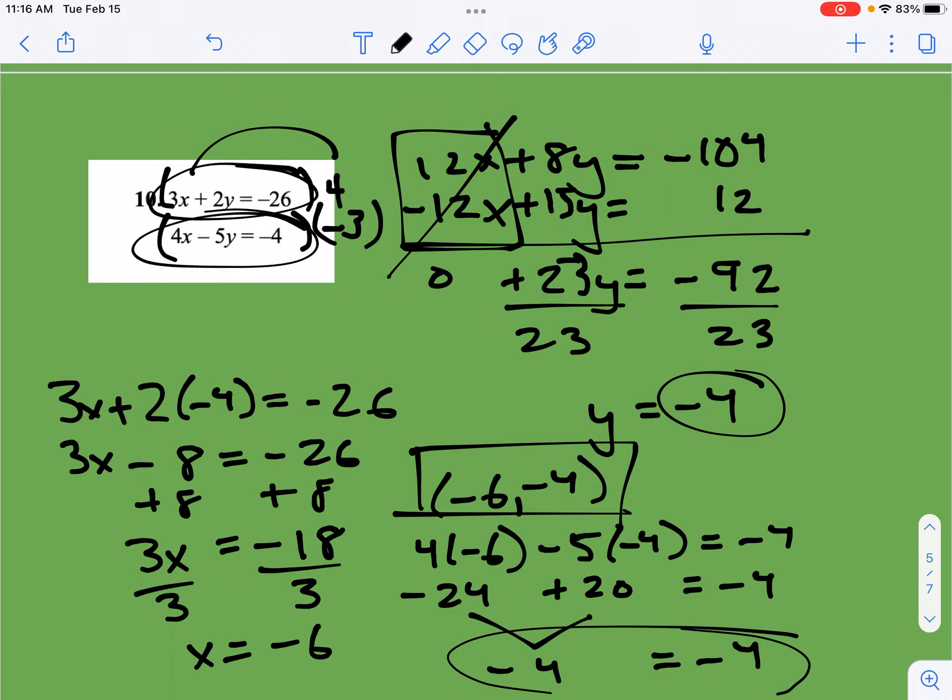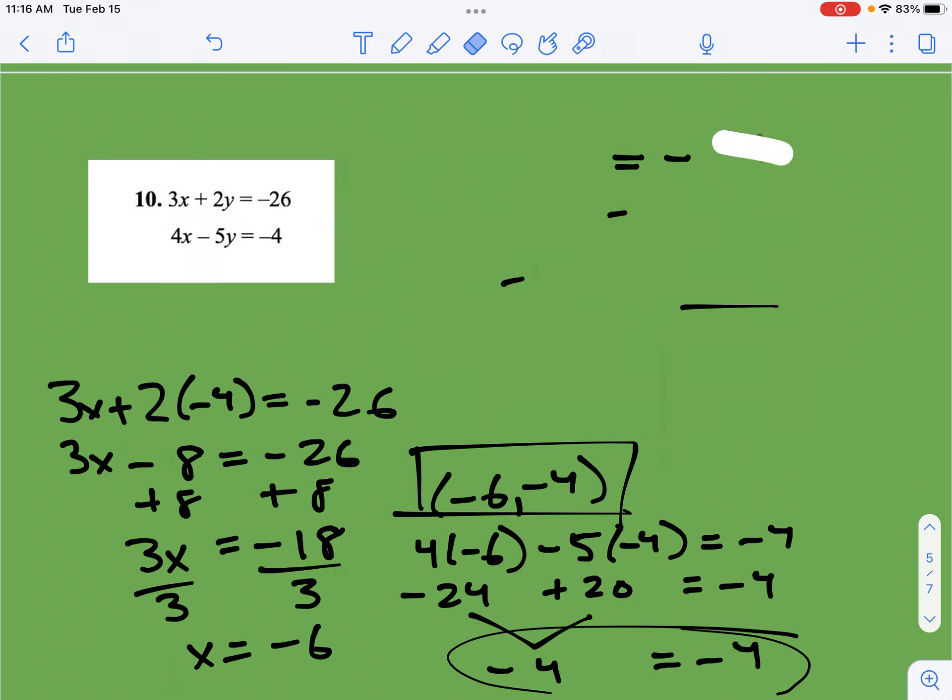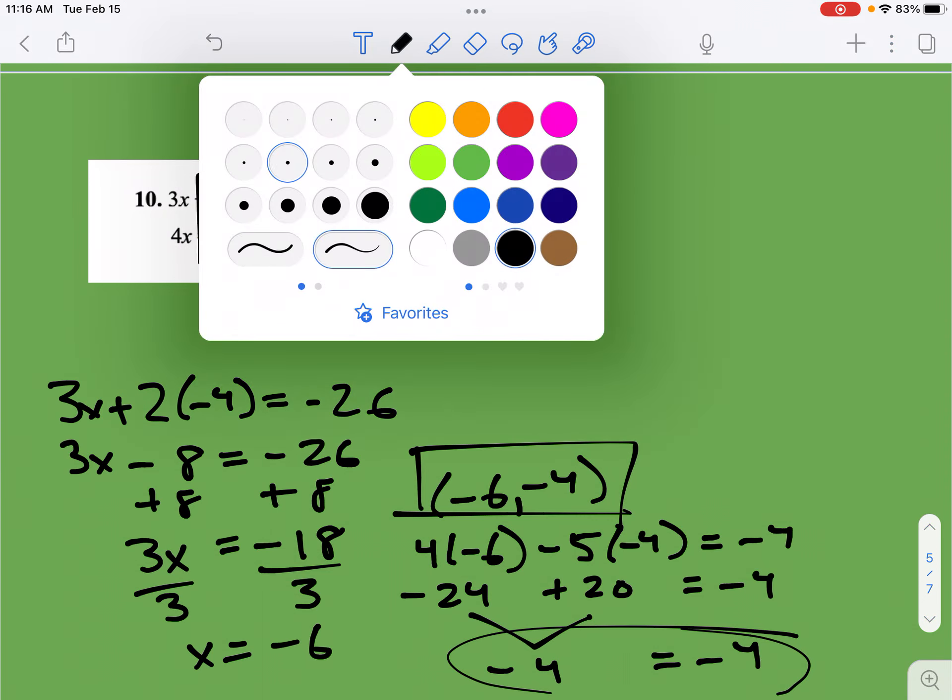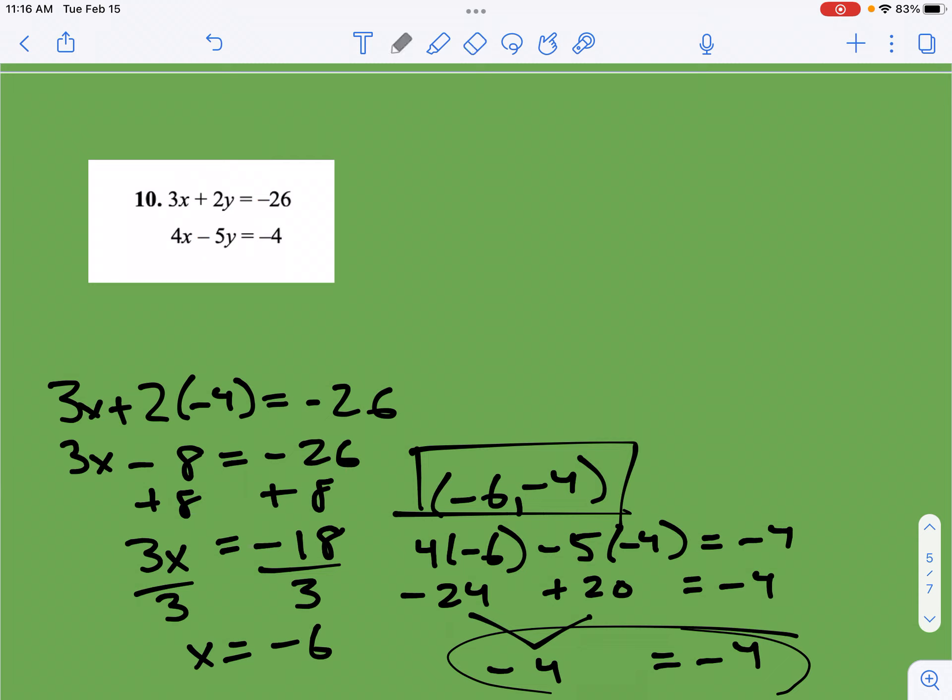Now, one thing I want to show you really quick. So if you're writing this down, you might want to pause the screen and copy this, because I'm going to do some erasing here. What I want to show you is that I can also do this same process but with the y terms. So if I look at my y terms, the common denominator between those two, like the lowest one, would be 10. So I would say to myself, what do I need to multiply the top one by to get this to equal 10, and what do I need to multiply the bottom one by to get this to be the opposite of 10, which would be negative 10?